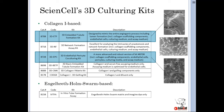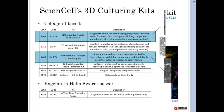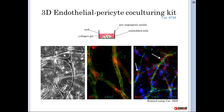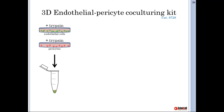Switching gears, we'll now talk about the embedded 3D model. We currently have two endothelial kits utilizing this model — one that includes only HUVECs for rudimentary tubule formation, and one that includes both HUVECs and pericytes for more advanced tubule formation and pruning. We'll be releasing a third kit soon that includes HUVECs, pericytes, and astrocytes for an embedded tri-culture model to approximate interactions at the blood-brain barrier.